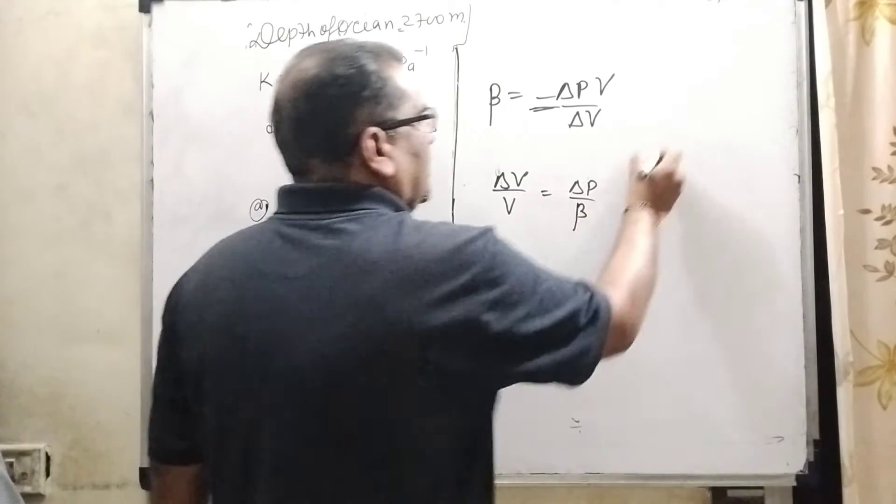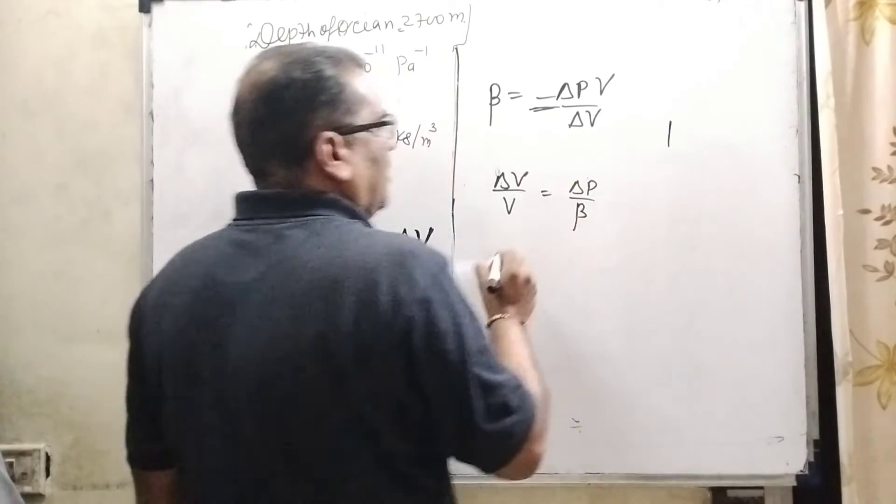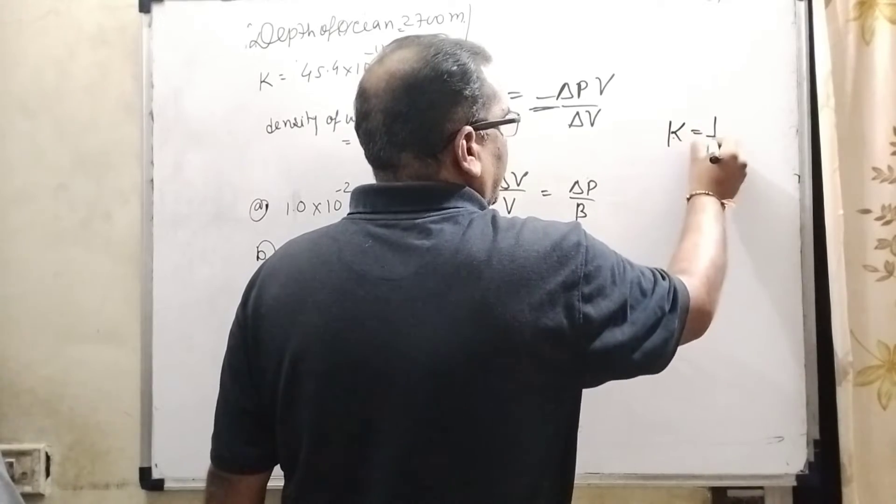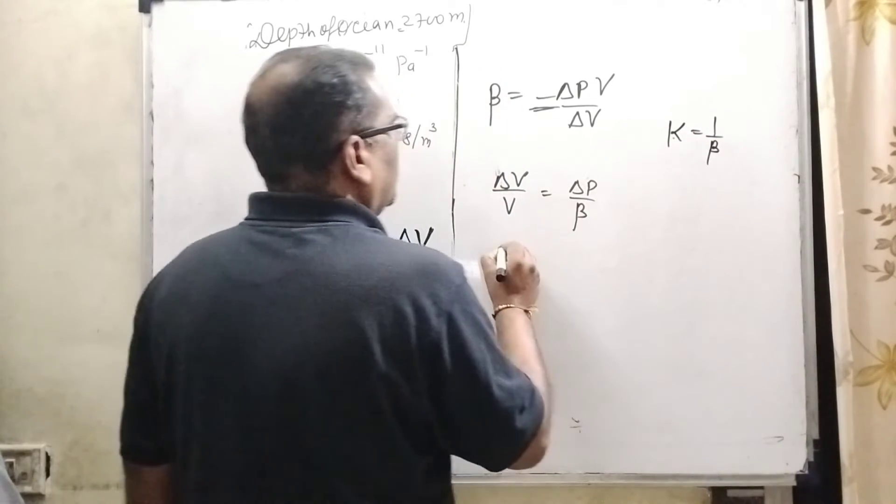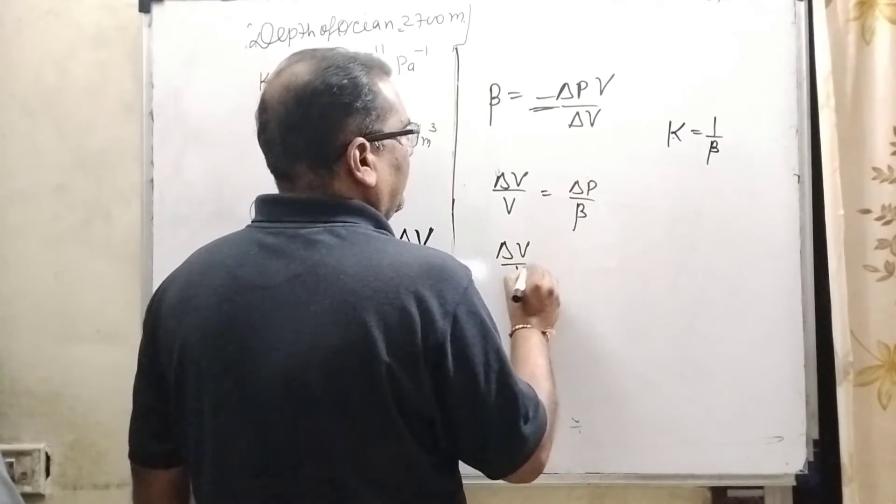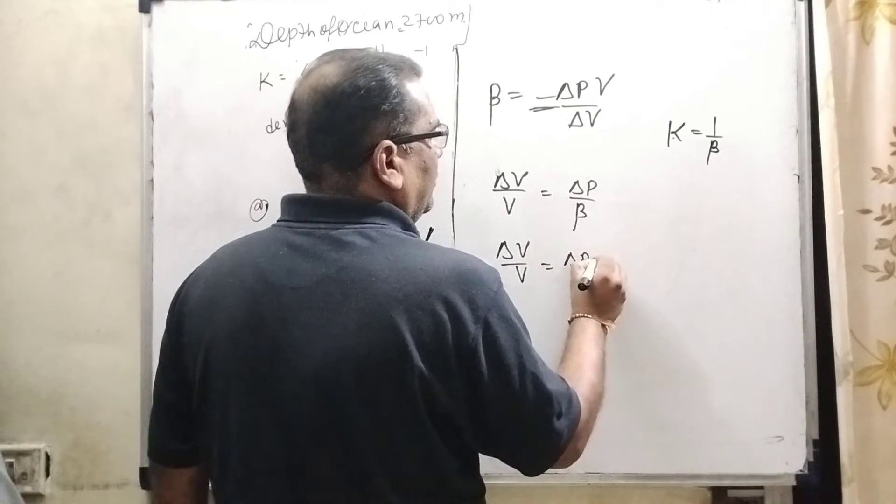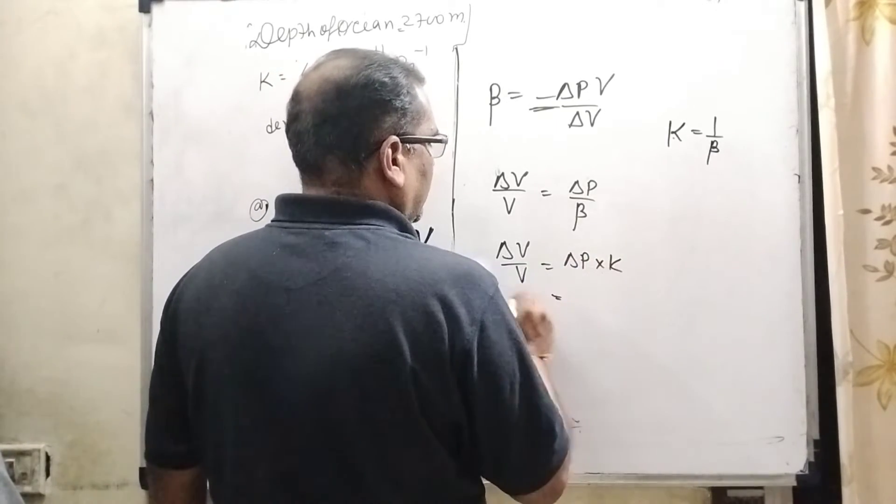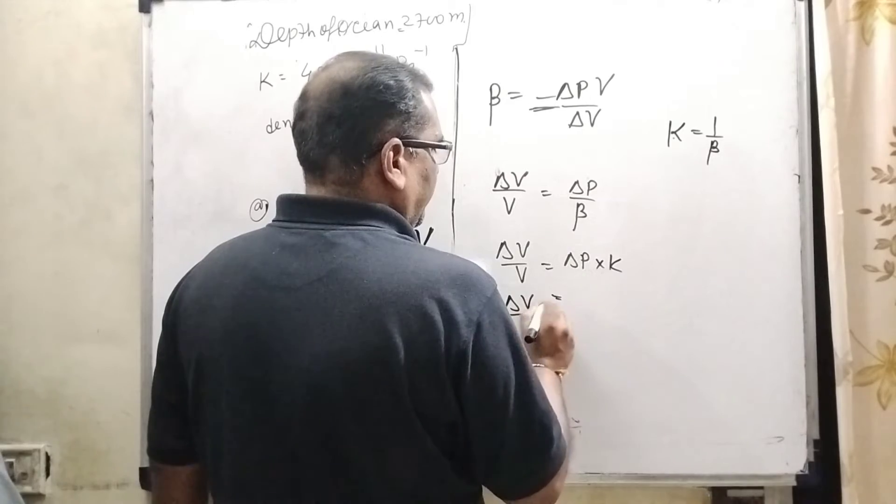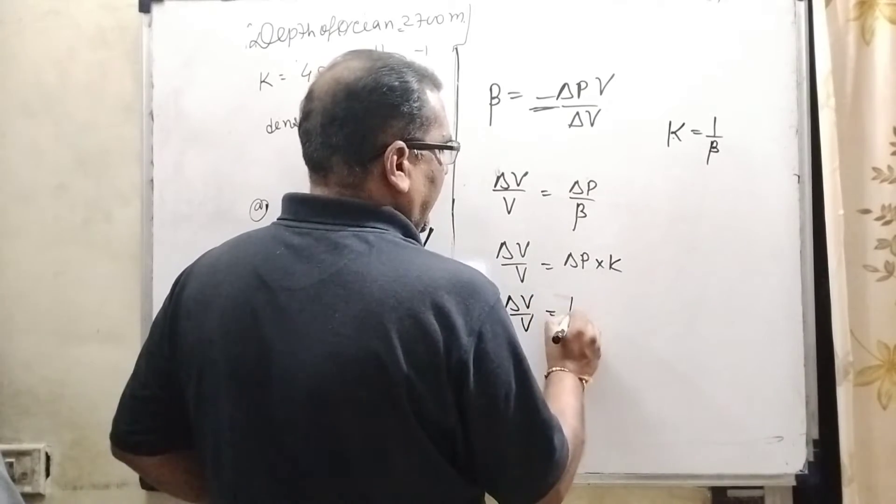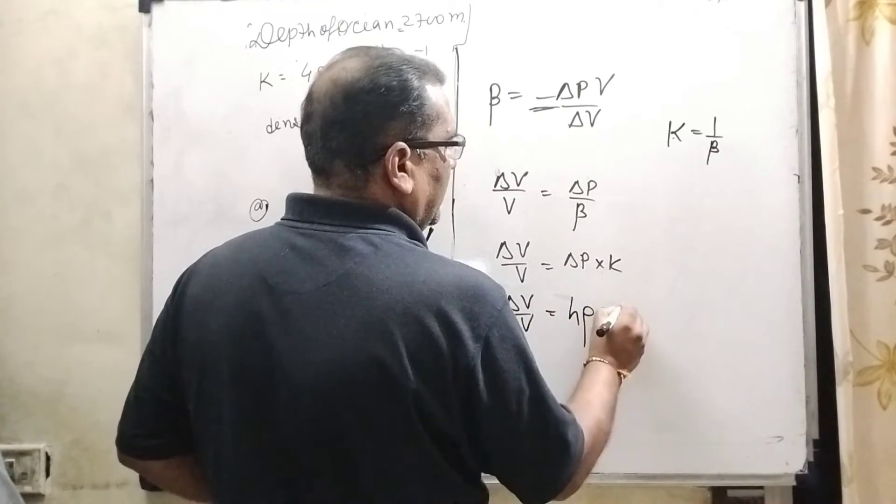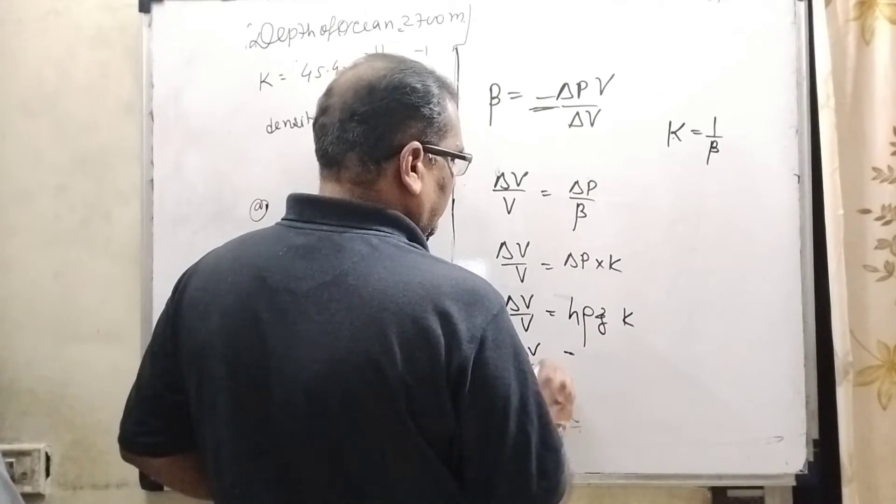Now it can be written as ΔV/V = ΔP/β. Here what is β and what is the relation between compressibility and β? As we know that K compressibility equals 1 upon β. So ΔV/V = ΔP × K. And as we know that pressure can be written as H ρ G and K.